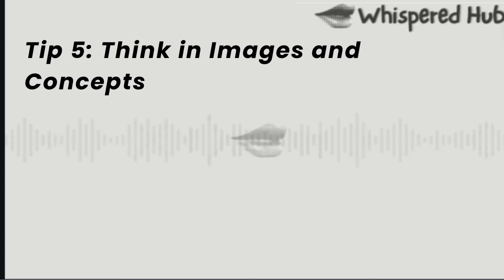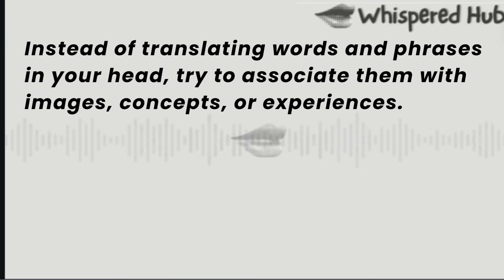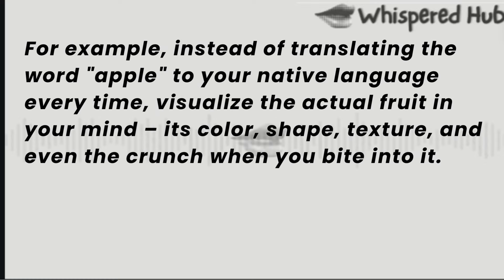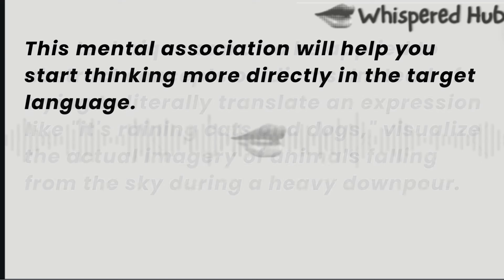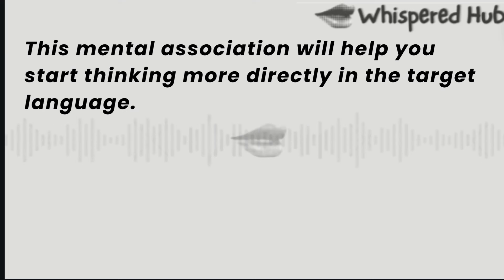Tip 5: Think in images and concepts. Instead of translating words and phrases in your head, try to associate them with images, concepts, or experiences. For example, instead of translating the word "apple" to your native language every time, visualize the actual fruit in your mind — its color, shape, texture, and even the crunch when you bite into it. This technique can also be applied to abstract concepts or idioms. Instead of trying to literally translate an expression like "it's raining cats and dogs," visualize the imagery of animals falling from the sky during a heavy downpour. This mental association will help you start thinking more directly in the target language.